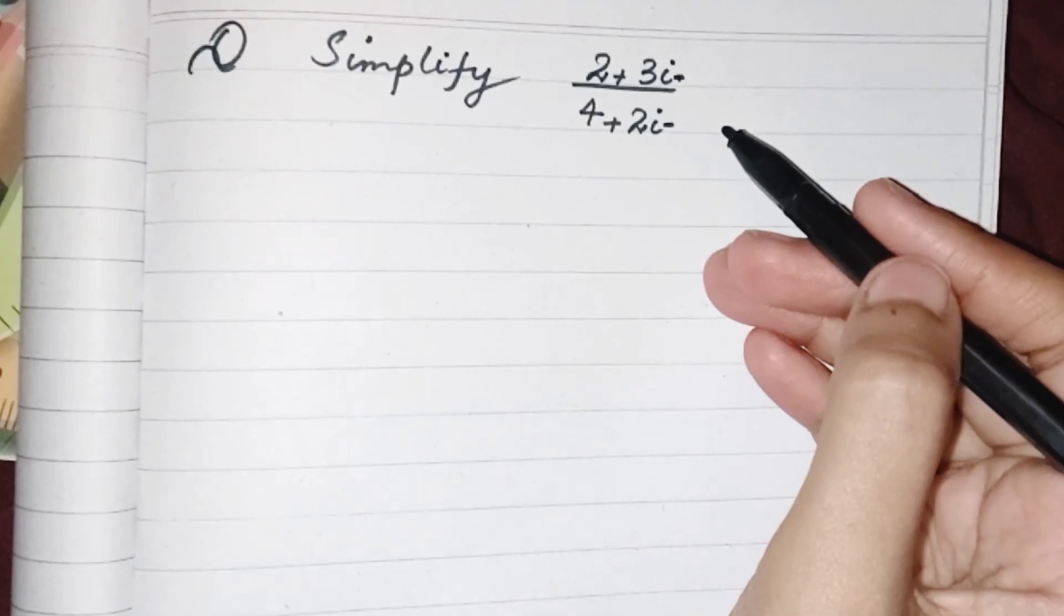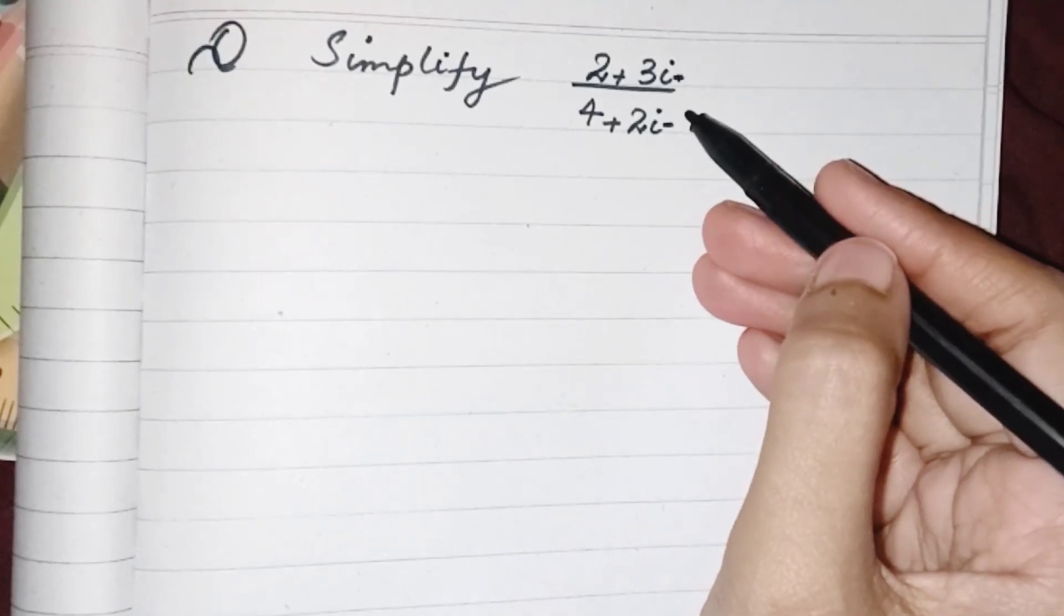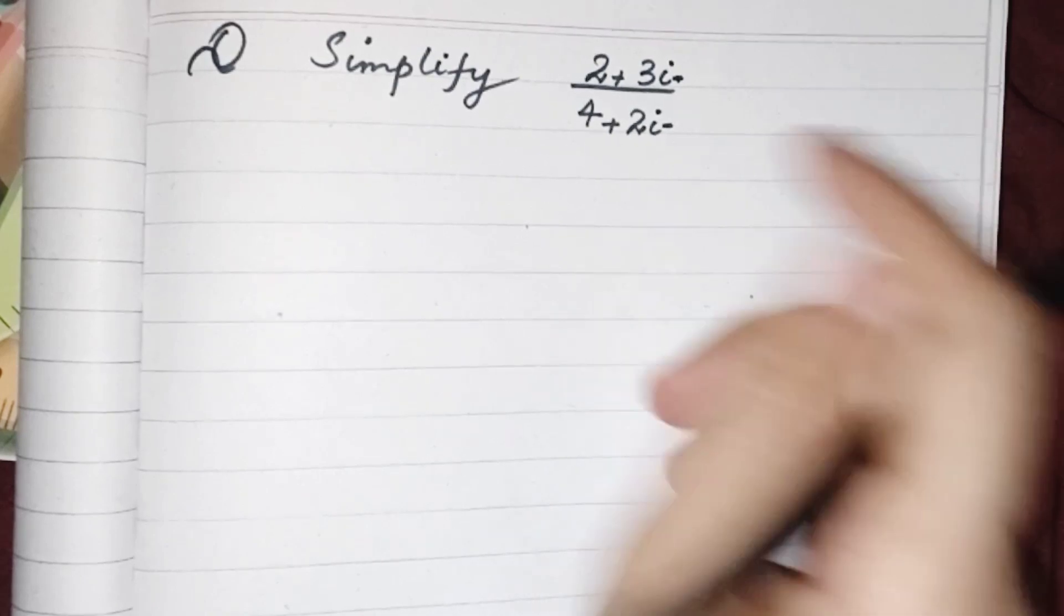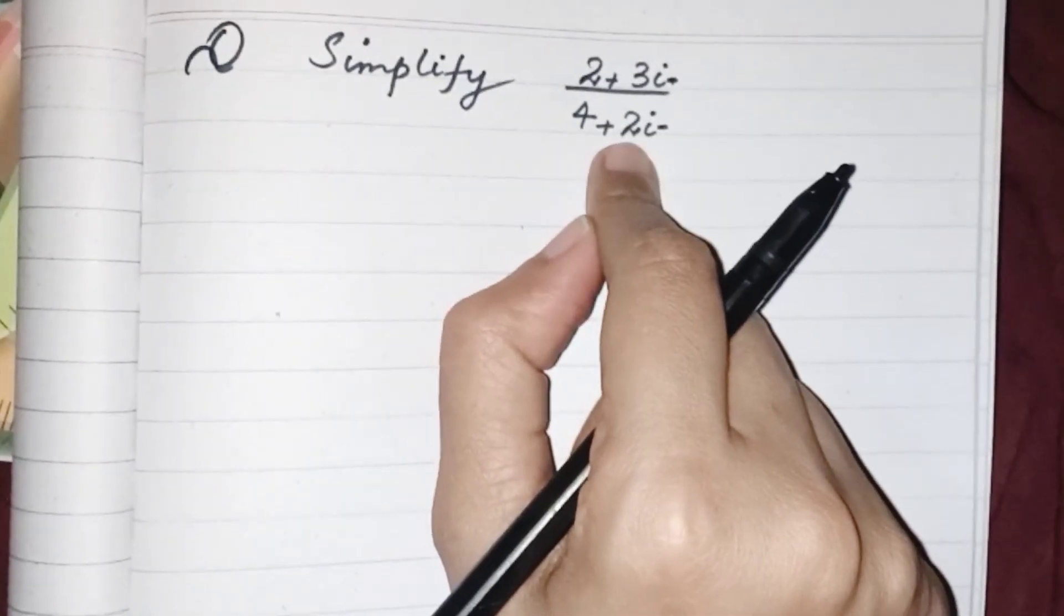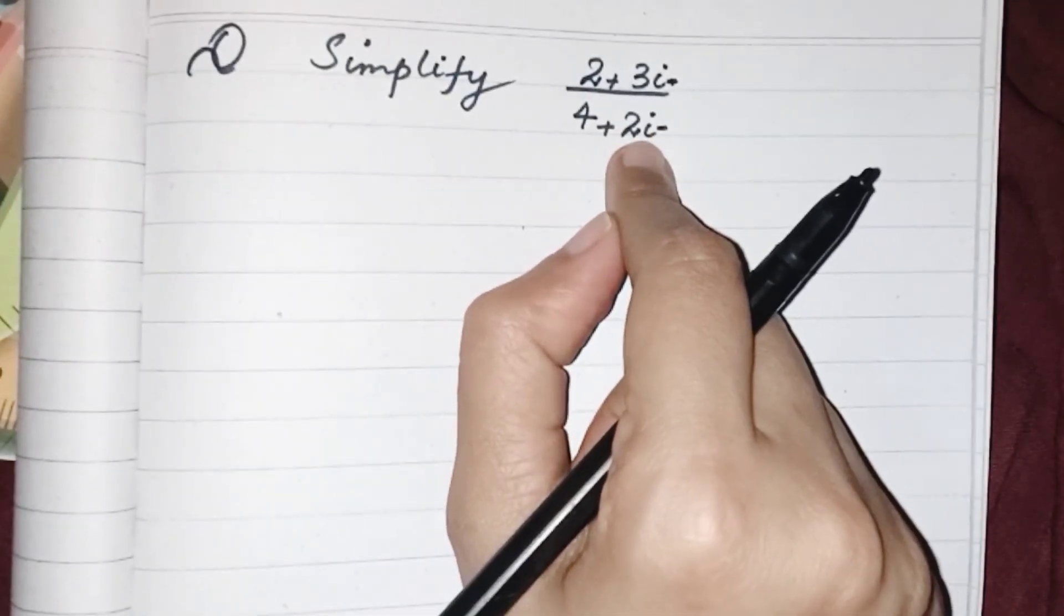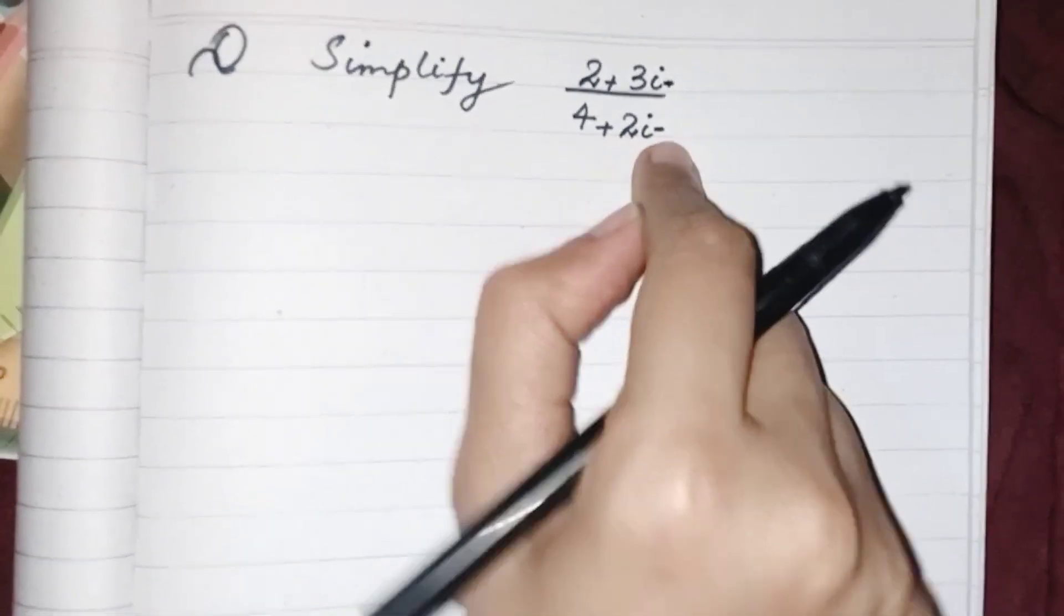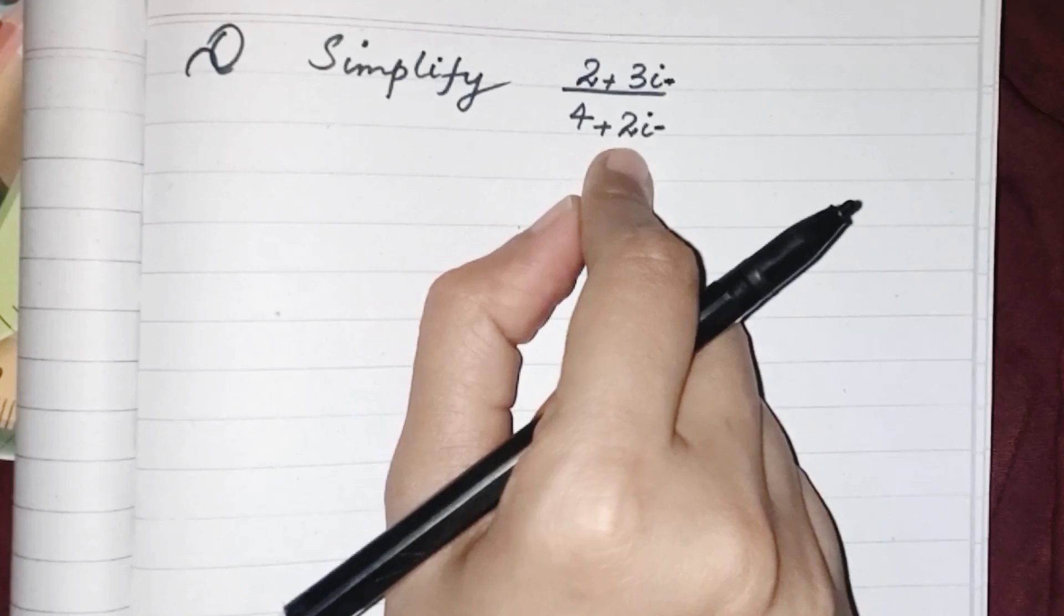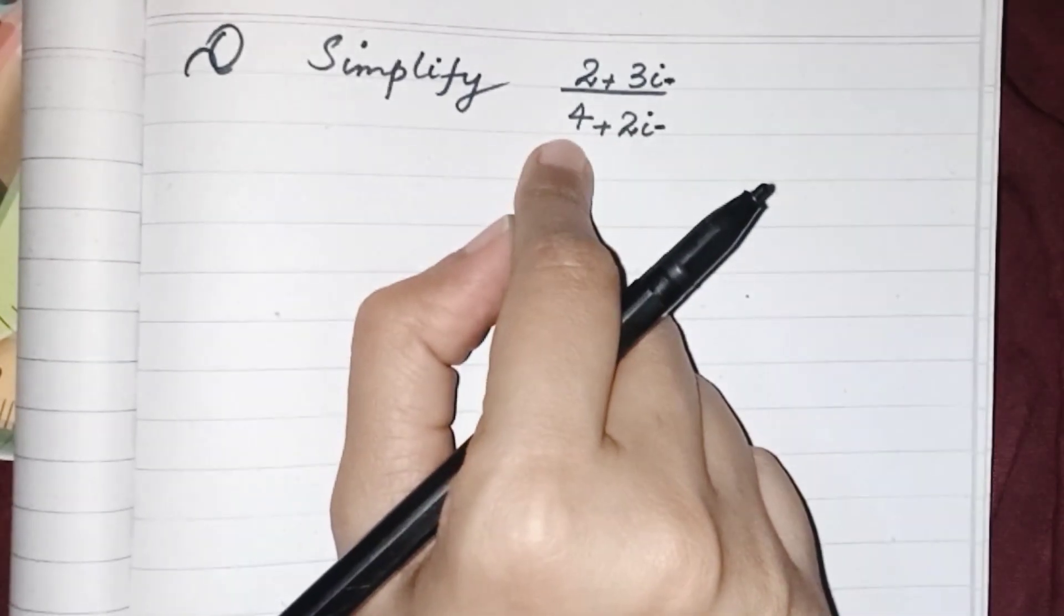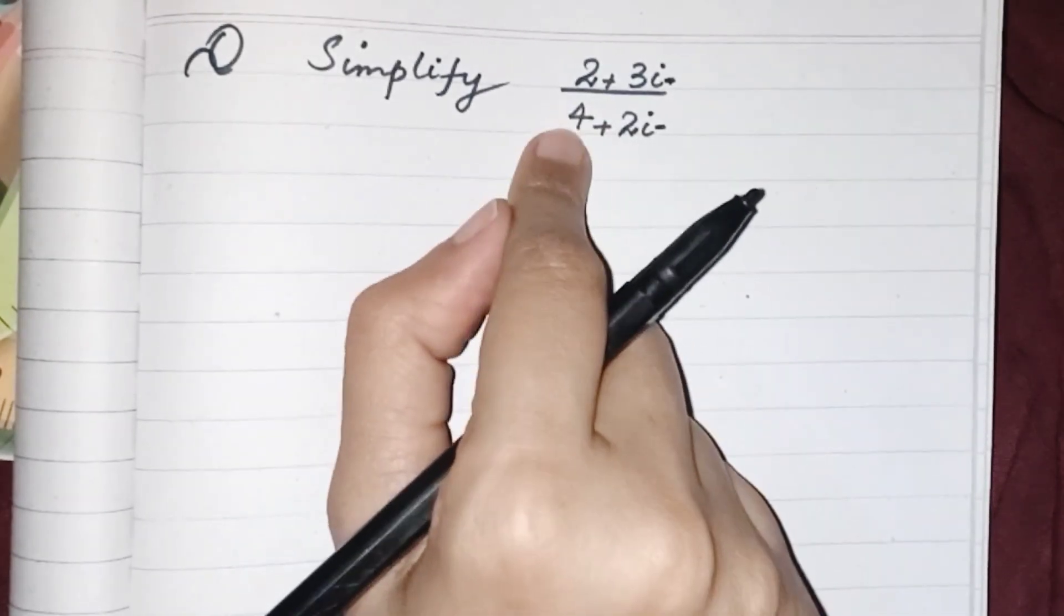Hello everyone, welcome back. Today we have to solve this complex fraction. How do we know that this fraction is a complex fraction? Because this fraction is having an imaginary part, a number or term having i, which shows that this is an imaginary part.